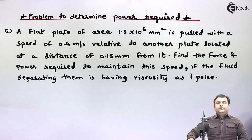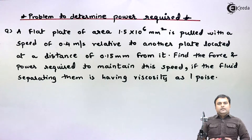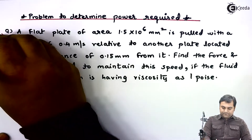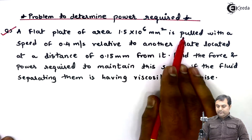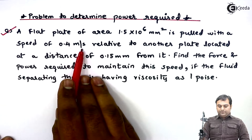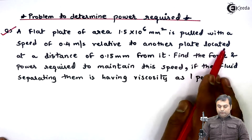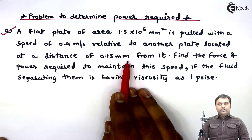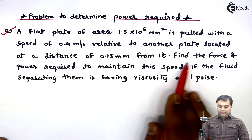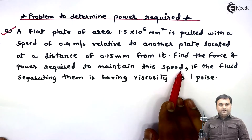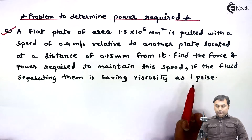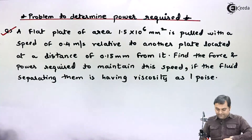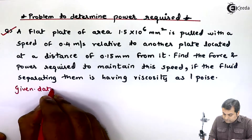Hello friends. In this video we will see how to calculate power required. The question given here: a flat plate of area 1.5 × 10⁶ mm² is pulled with a speed of 0.4 meter per second relative to another plate located at a distance of 0.15 mm from it. Find the force and power required to maintain this speed if the fluid separating them has viscosity of one poise.